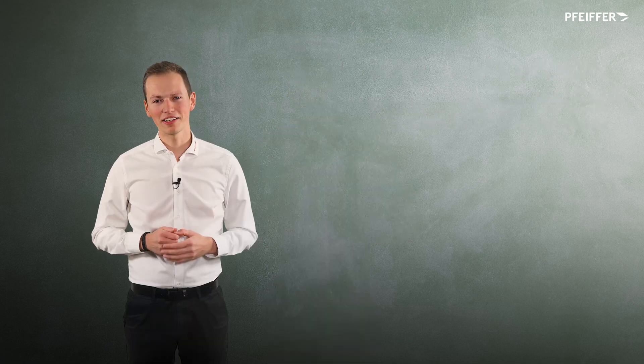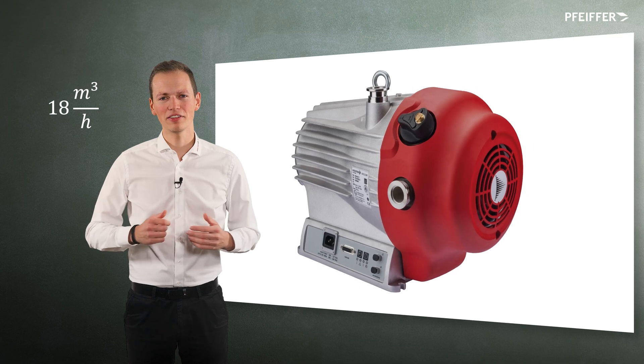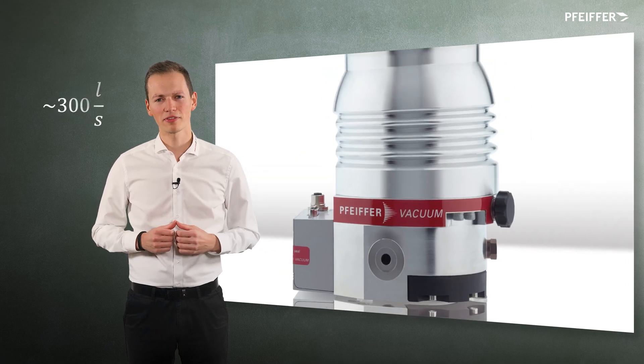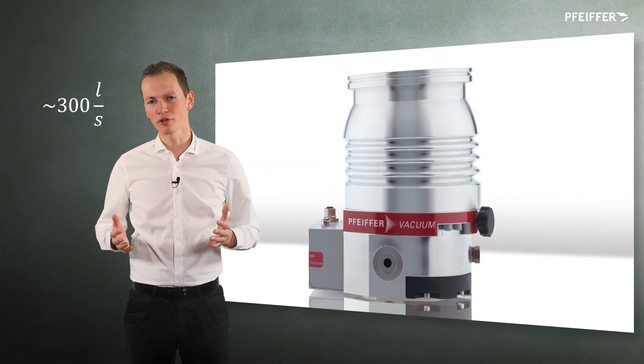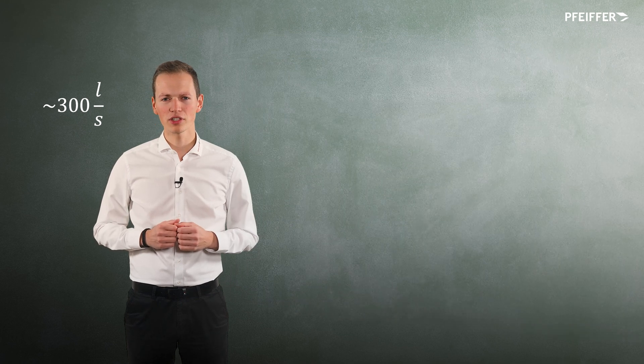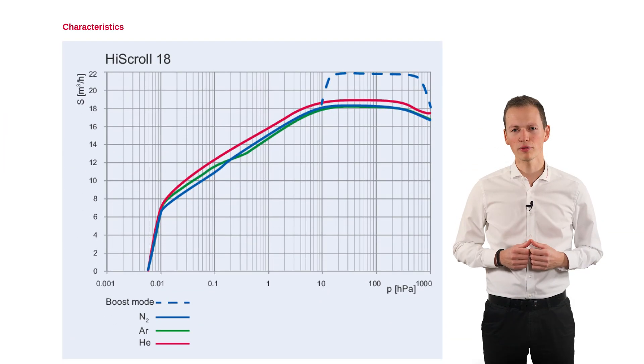You may have heard that a vacuum pump has for example 18 cubic meters per hour or 300 liters per second pumping speed. If not, you will find this information in almost every data sheet for vacuum pumps.